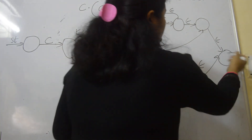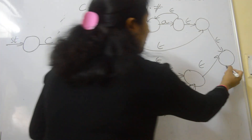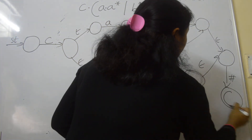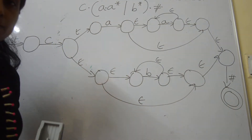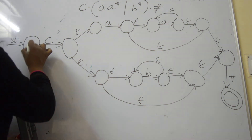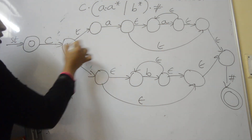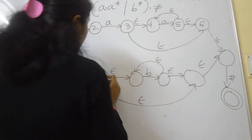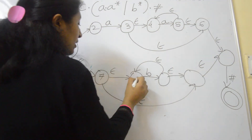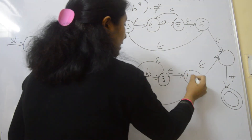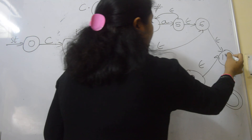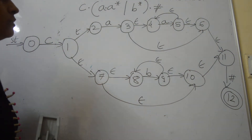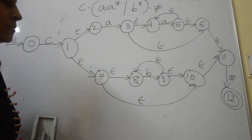Merge here, followed by hash, which leads to the accepting state. Now give the state numbers: 0, 1, 2, 3, 4, 5, 6, 7, 8, 9, 10, 11, and 12 — total 13 states, from 0 to 12.